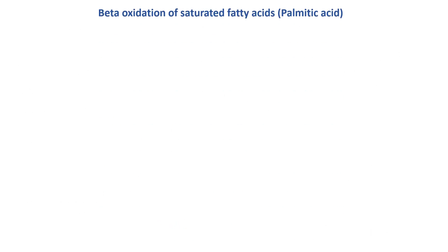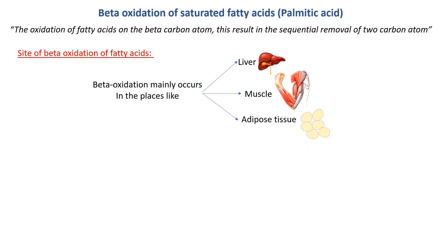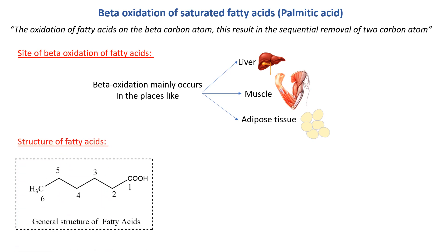Next, we will start the beta oxidation of fatty acids — specifically the palmitic acid pathway. Beta oxidation of fatty acids is defined as the oxidation of fatty acids on the beta carbon atom, which results in the sequential removal of two carbon atoms. Beta oxidation mainly occurs in three sites: liver, muscle, and adipocytes.